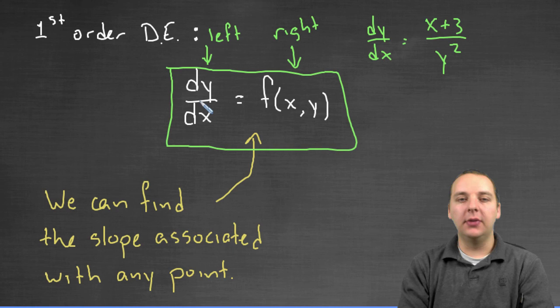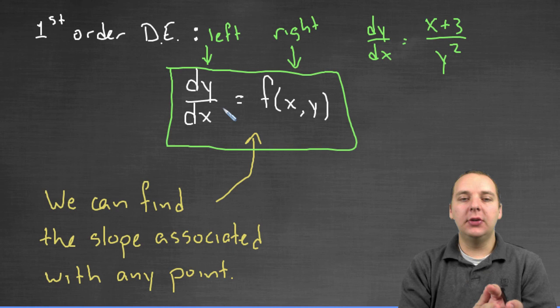The slope associated with that point. If you want the slope associated with the point three five, well then plug in three five into the right hand side, and you'll get dy/dx equals a new number. So it turns out that every point in the plane is associated with some slope.